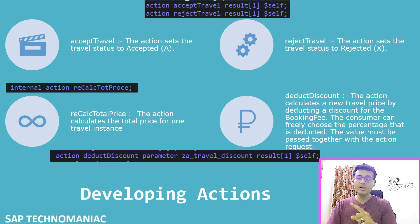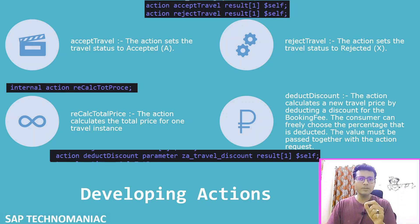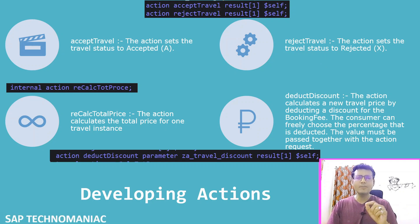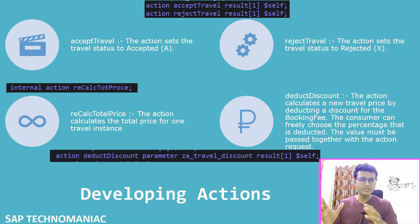In our application's list report page you can see four action buttons: one for accept travel, one for reset travel, one for calculate total price — which you won't see on the front end since it is an internal action — and one for deduct discount. Out of these four actions, we have implemented accept travel, reject travel, and calculate total price in the managed scenario.